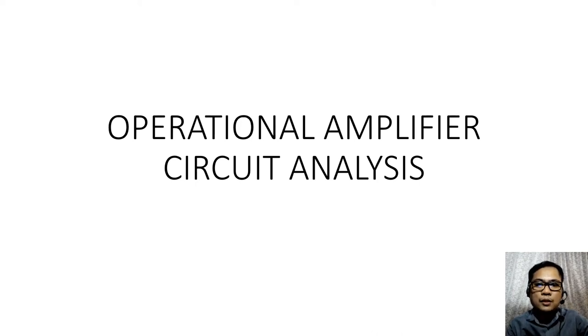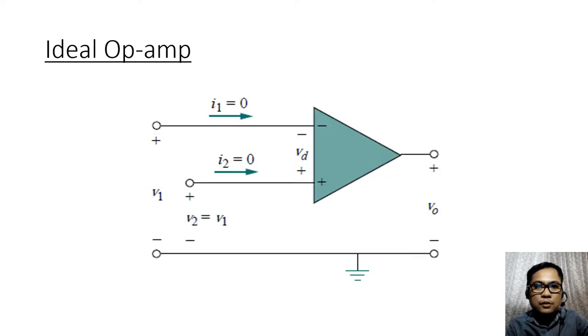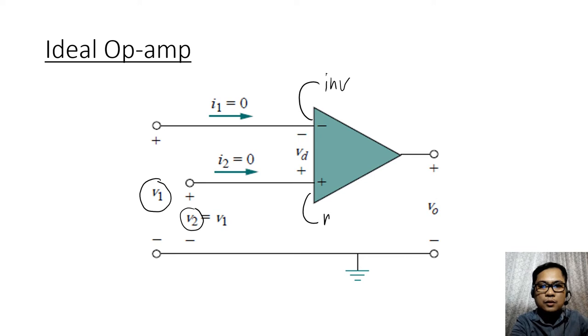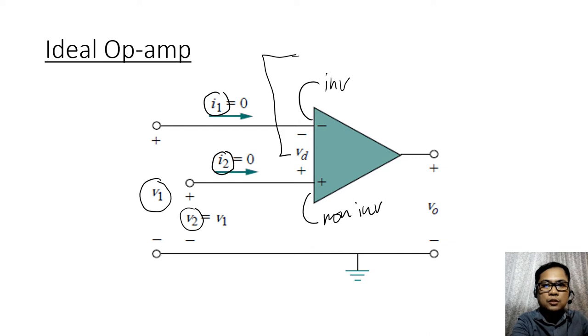Okay, so let's start with the operational amplifier circuit analysis. To start with, we have the picture of an ideal op amp. So an ideal op amp has input voltages v1 and v2, corresponding to your inverting input and the non-inverting input. You also have input currents i1 and i2, your differential voltage vd which is the difference between v2 minus v1, and you have your output voltage.